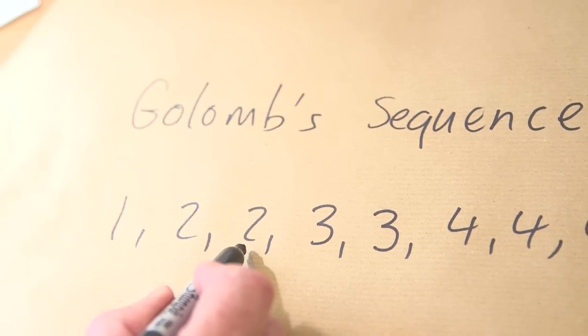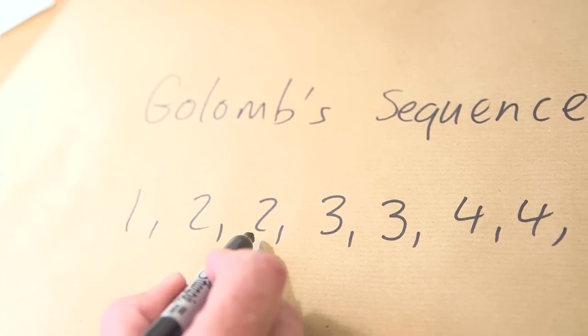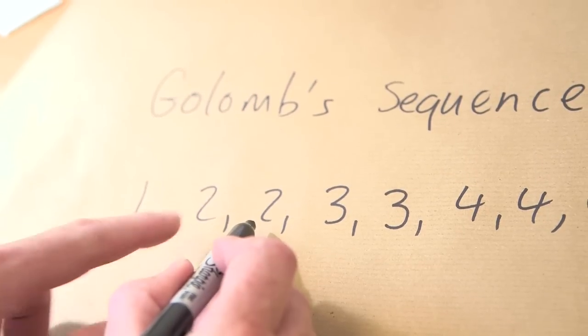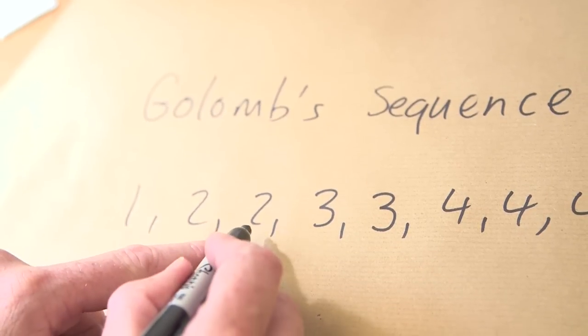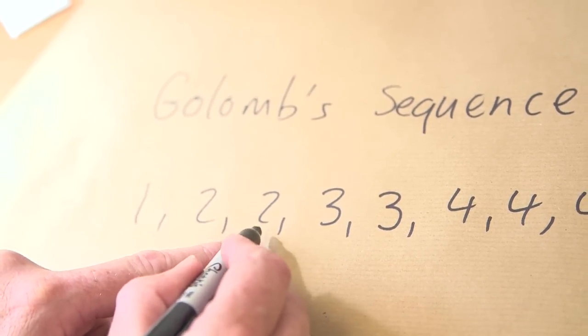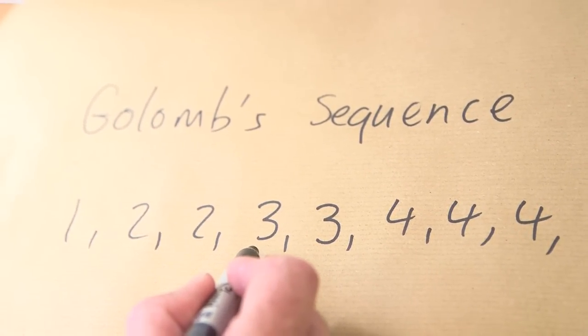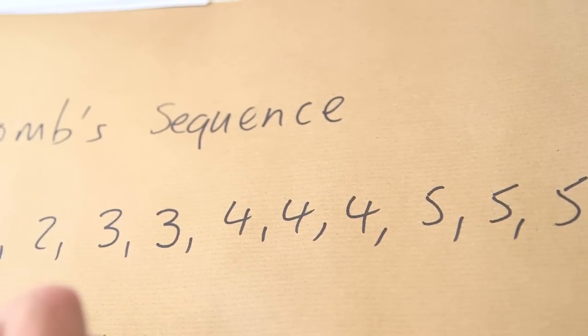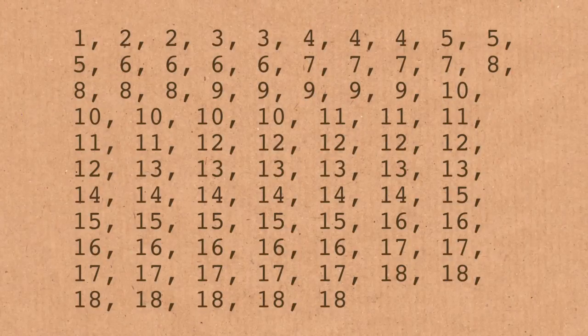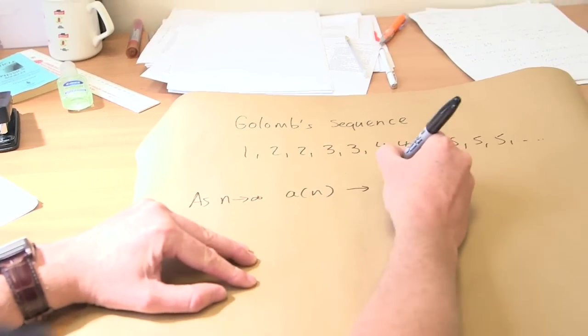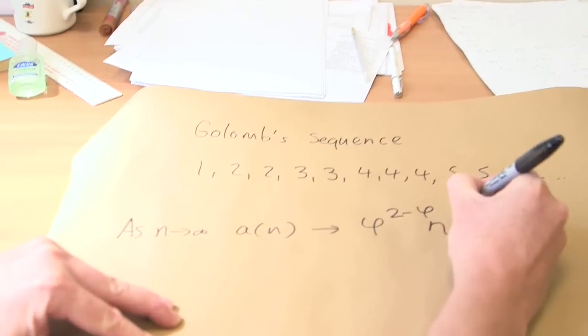Going to the third position: how many times does three appear? Well, two had to appear twice, so we put two there — meaning three appears twice in the sequence. Then the fourth position: four appears three times. You keep going in this manner, building the sequence up. It kind of knows about itself. And there's another feature: at very large n, the nth position of this sequence tends towards φ^(2−φ) · n^(φ−1), where φ is the golden ratio — it just appears everywhere.